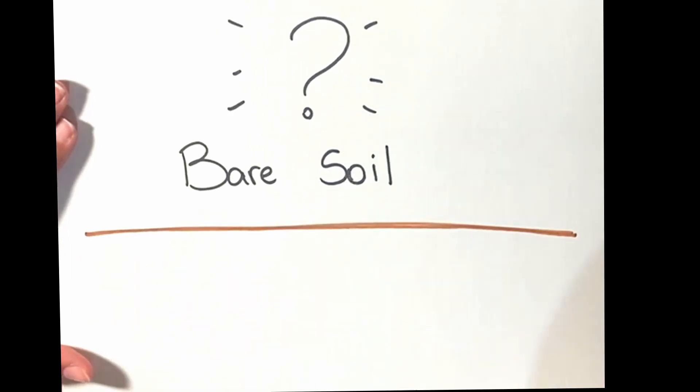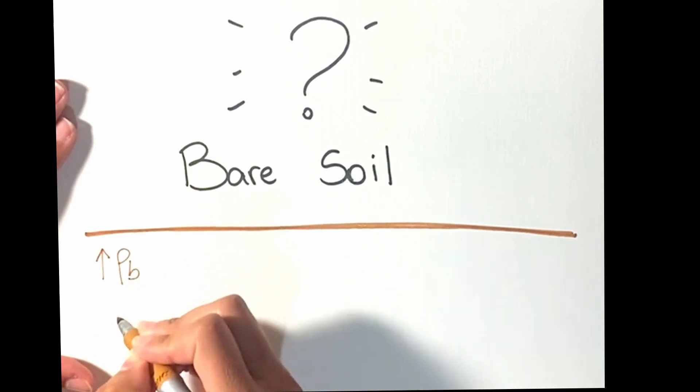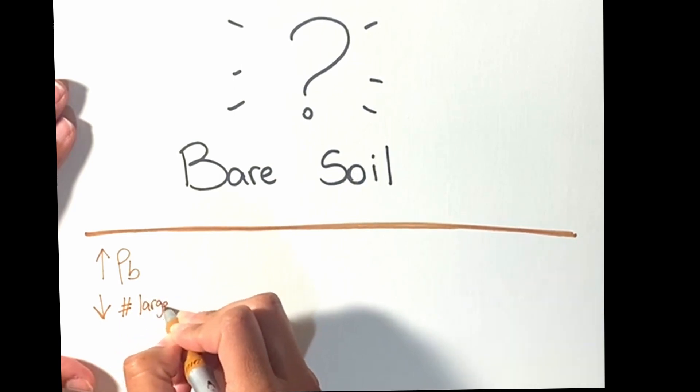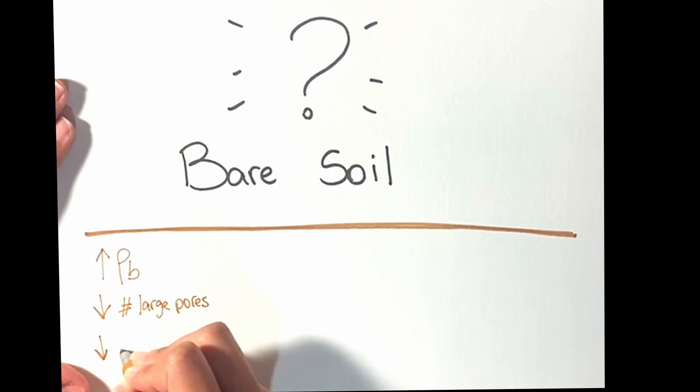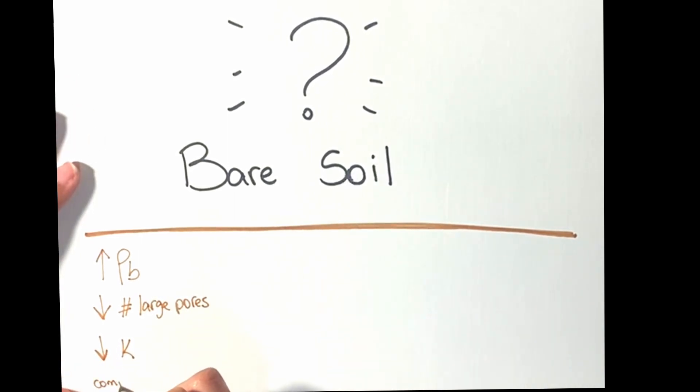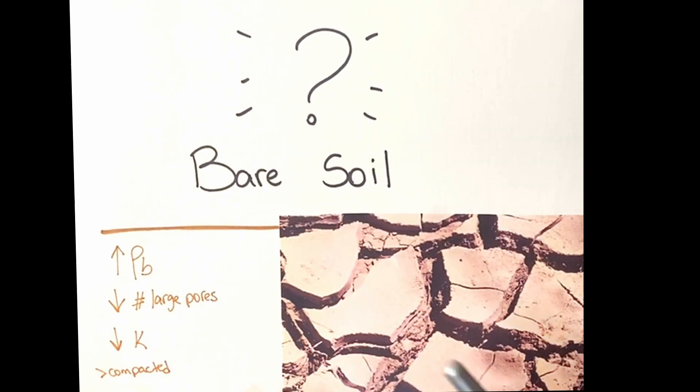Soil crusting is a relatively thin layer of dense and tough material at the soil surface. This layer is considerably more compacted, has a higher bulk density, a reduced number of large pores, and a lower hydraulic conductivity when compared with underlying soil.